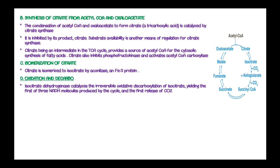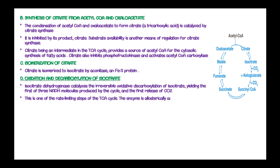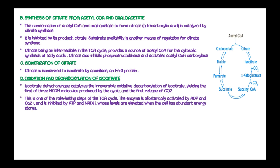The third step is oxidation and decarboxylation of this isomerized isocitrate. Isocitrate dehydrogenase enzyme is responsible for catalyzing the irreversible oxidative decarboxylation of isocitrate, yielding the first of three NADH molecules produced by the tricarboxylic acid cycle and the first release of carbon dioxide. This is one of the rate-limiting steps in the tricarboxylic acid cycle. The enzyme is allosterically activated by ADP and calcium ions, and inhibited by ATP and NADH, whose levels are elevated when the cell has abundant energy stores.